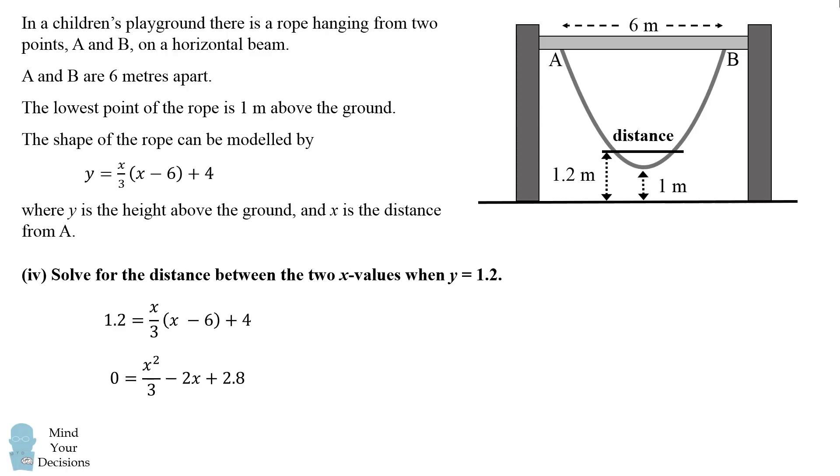We then multiply by 3 so that we have 0 is equal to x squared minus 6x plus 8.4. This is just so that x squared has a coefficient of 1.